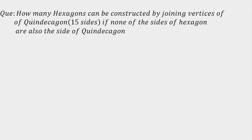Today we are going to solve a question on permutation and combination. The question is: how many hexagons can be constructed by joining the vertices of a quindecagon — that is, a polygon of 15 sides — if none of the sides of the hexagon are also the sides of the quindecagon?